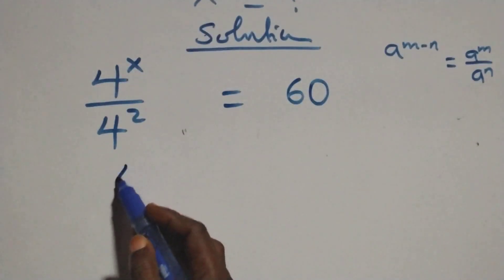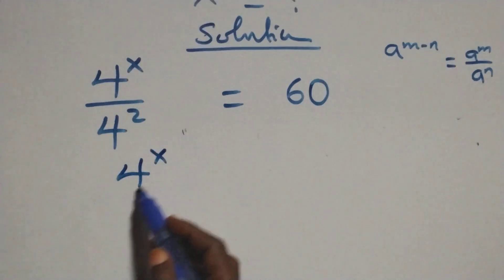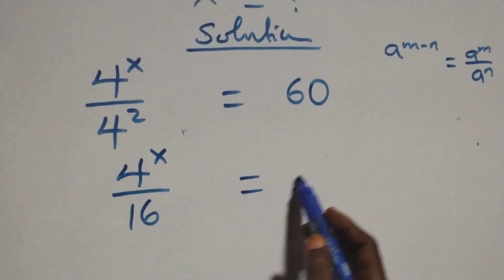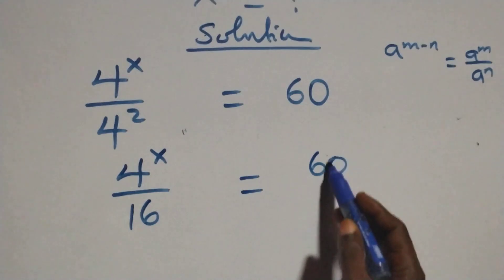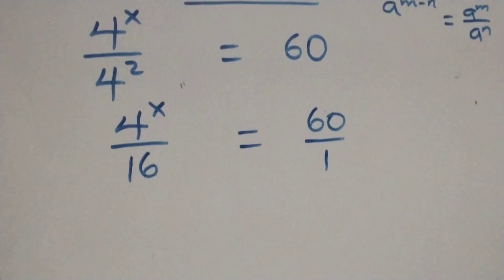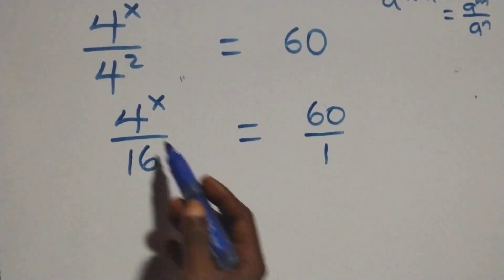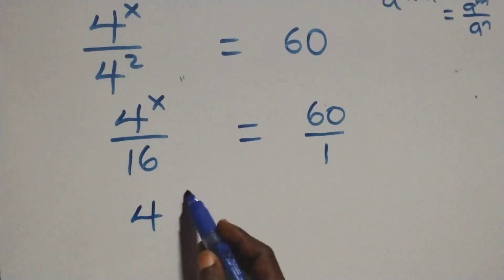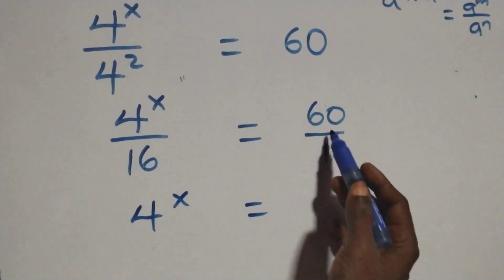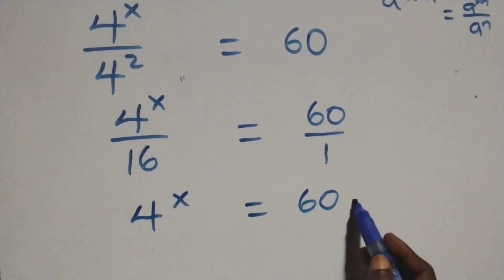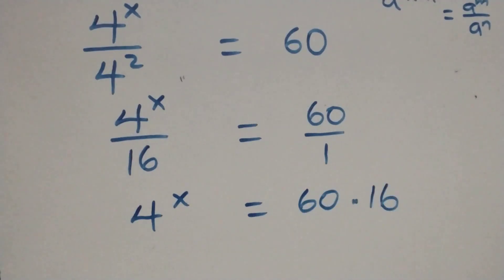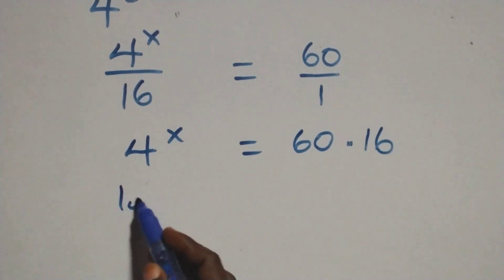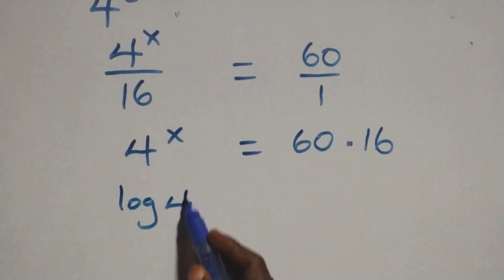In the next step, we use the same rule: four raised to power x over four squared — four times four is sixteen. We can write it as sixty over one. Then we cross-multiply: four raised to power x times one, which is the same as four raised to power x, equals sixty times sixteen.